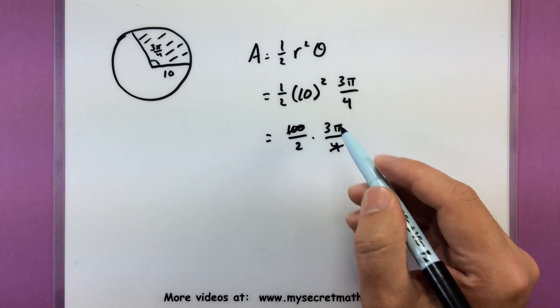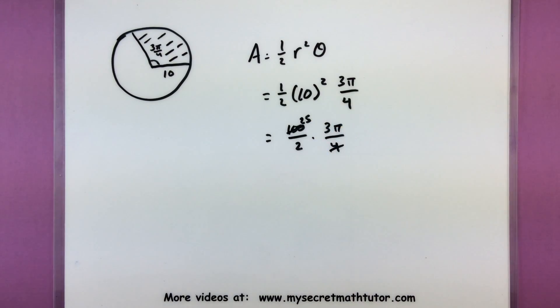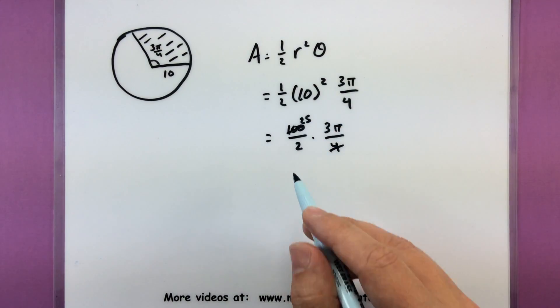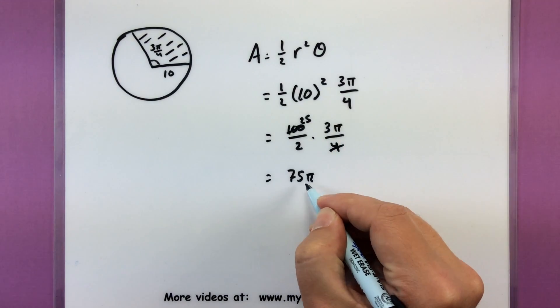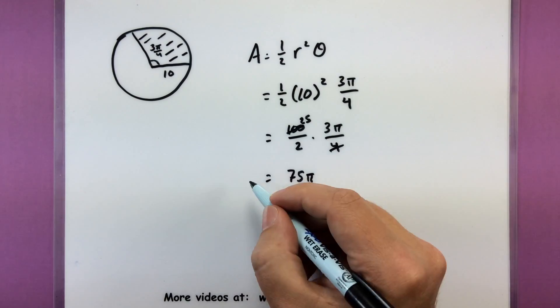So now we're reducing this. 4 goes into 100, 25 times. Nothing else can really cancel. So 25 times 3 is 75π, all divided by 2. So that is the area.